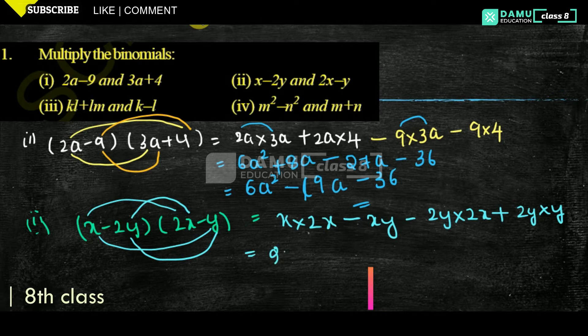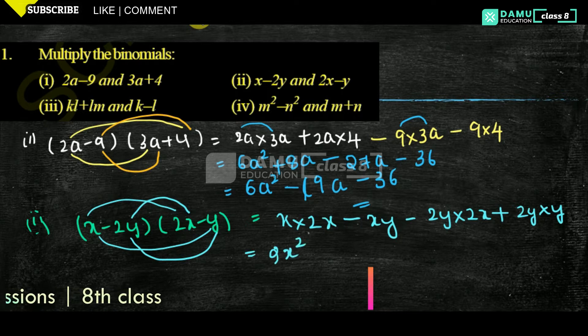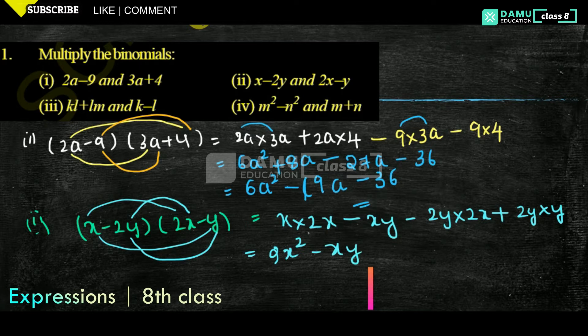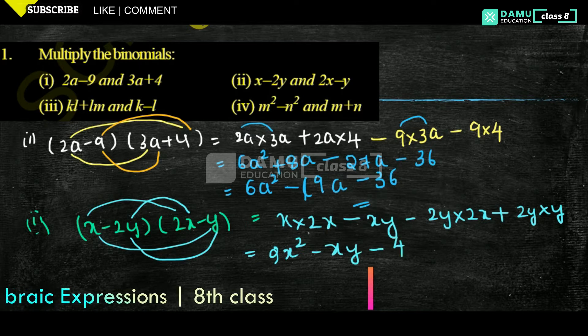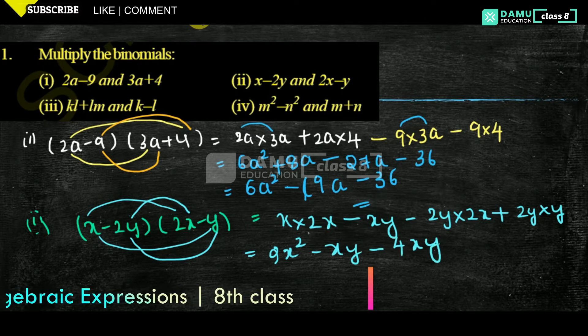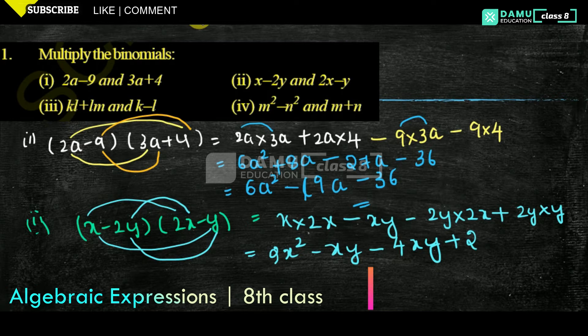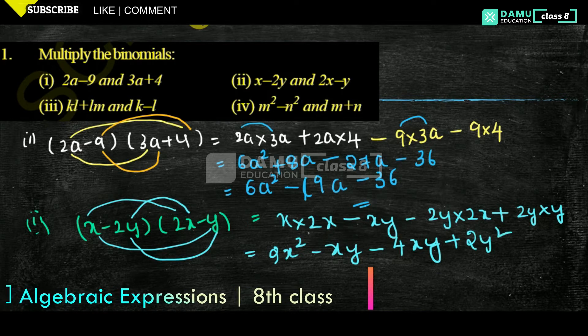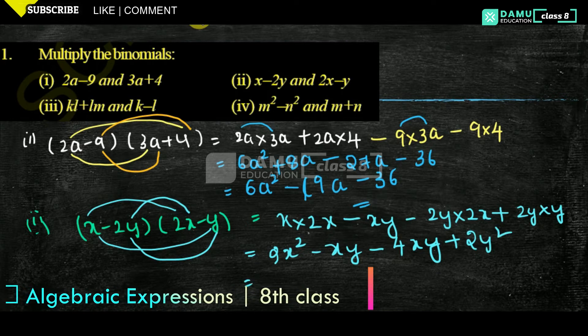So: 2 into 1 is 2x squared, minus xy, minus 2 into 2 is 4xy, plus 2 into 1 is 2y squared.